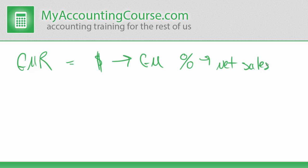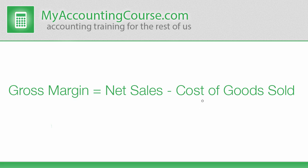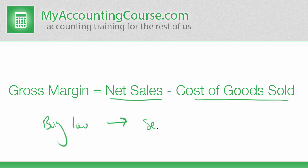What exactly is a gross margin and why are we trying to calculate a ratio based on sales? Gross margin is an efficiency calculation that tells how well a company can buy and sell its inventory or other merchandise. Gross margin is calculated by subtracting the cost of goods sold from the net sales.